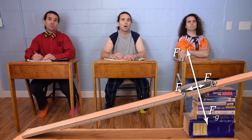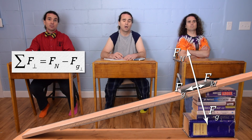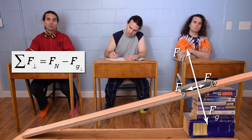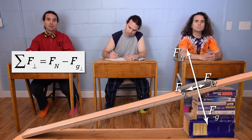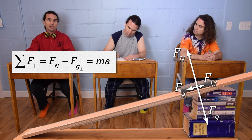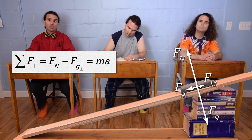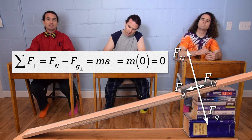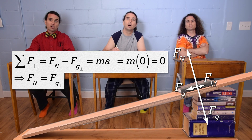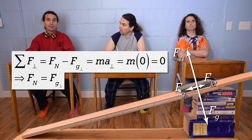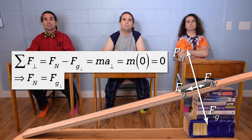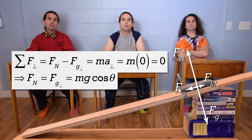Let's sum the forces. The net force in the perpendicular direction equals force normal minus force of gravity perpendicular, which equals mass times the acceleration in the perpendicular direction. The book is not moving perpendicular to the incline, so the acceleration in the perpendicular direction is zero. Therefore, the force normal equals the force of gravity perpendicular, and that equation is mass times acceleration due to gravity times the cosine of the incline angle. We can put that in our equation holster.